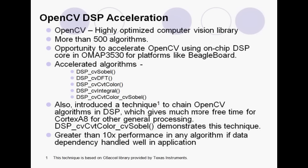Today, I am able to demonstrate the acceleration of OpenCV algorithms using the C64X Plus DSP core. My work successfully demonstrates performance improvement greater than 10 times in any algorithm if data dependency is tackled wisely in the application. A few algorithms that I have accelerated are CvSobel, CvDFT, CvConvertColor, and CvIntegral. My work also demonstrates chaining of algorithms in the DSP core, which helps to reduce the communication overhead between the Cortex and DSP.